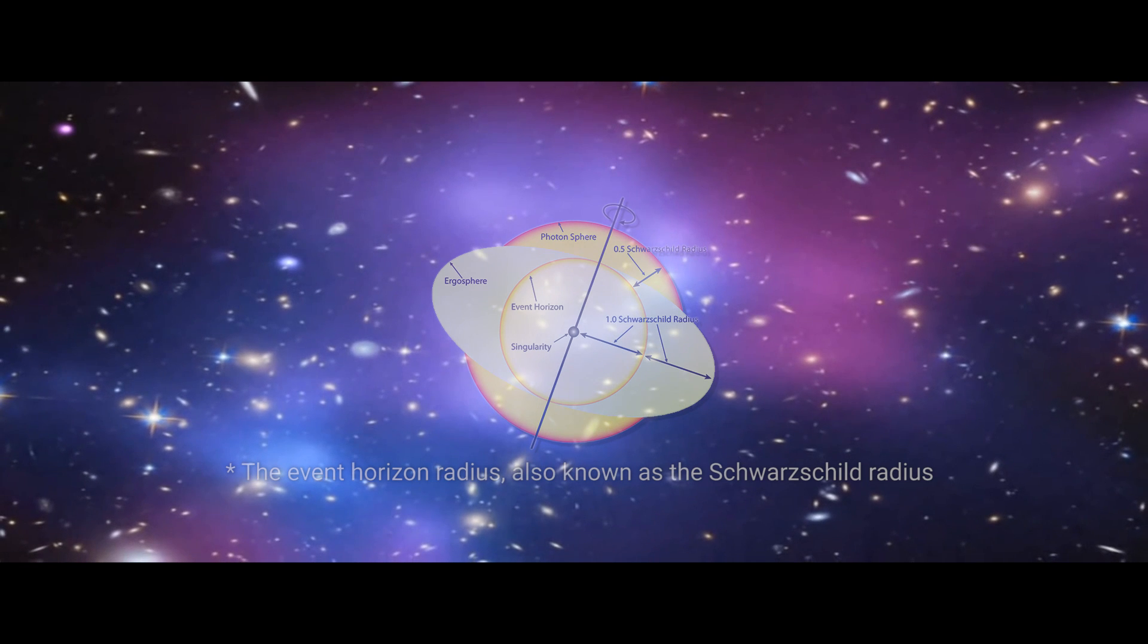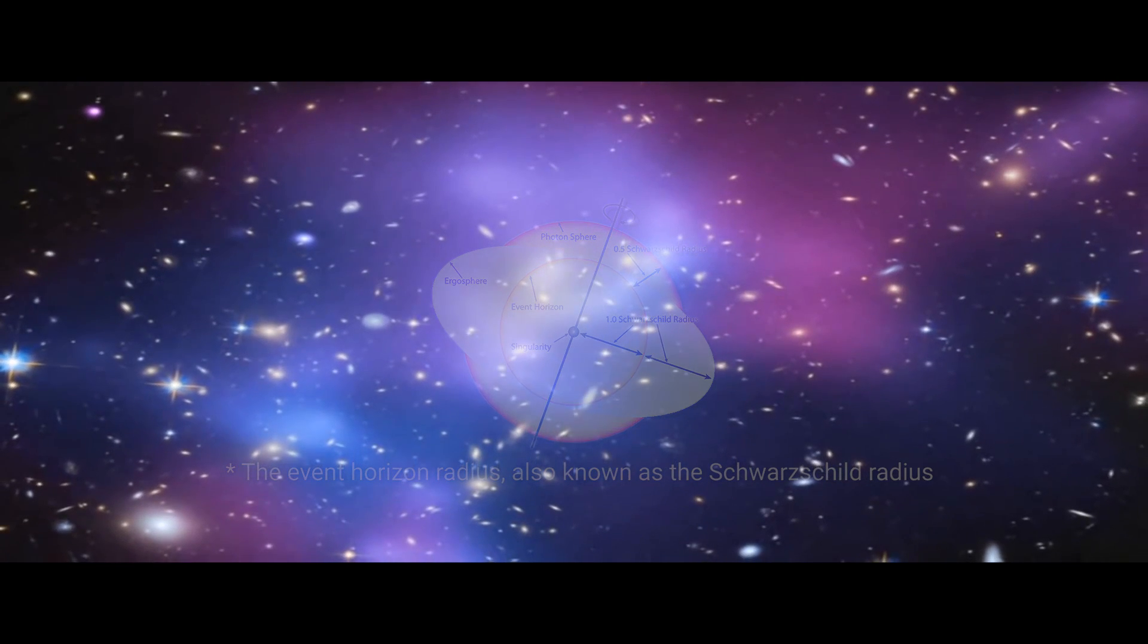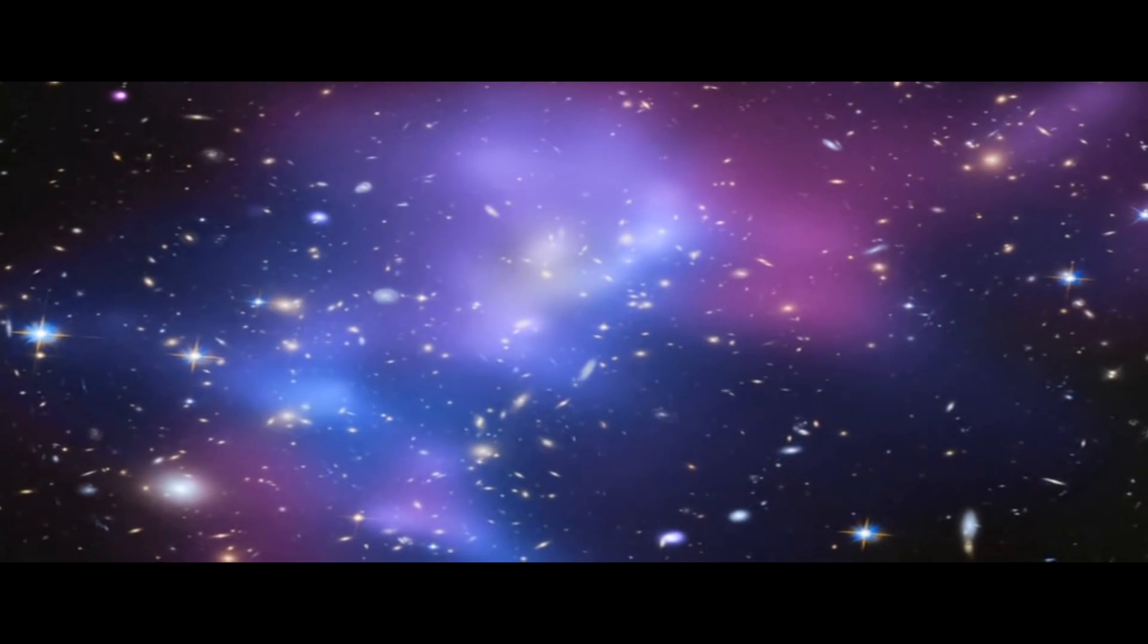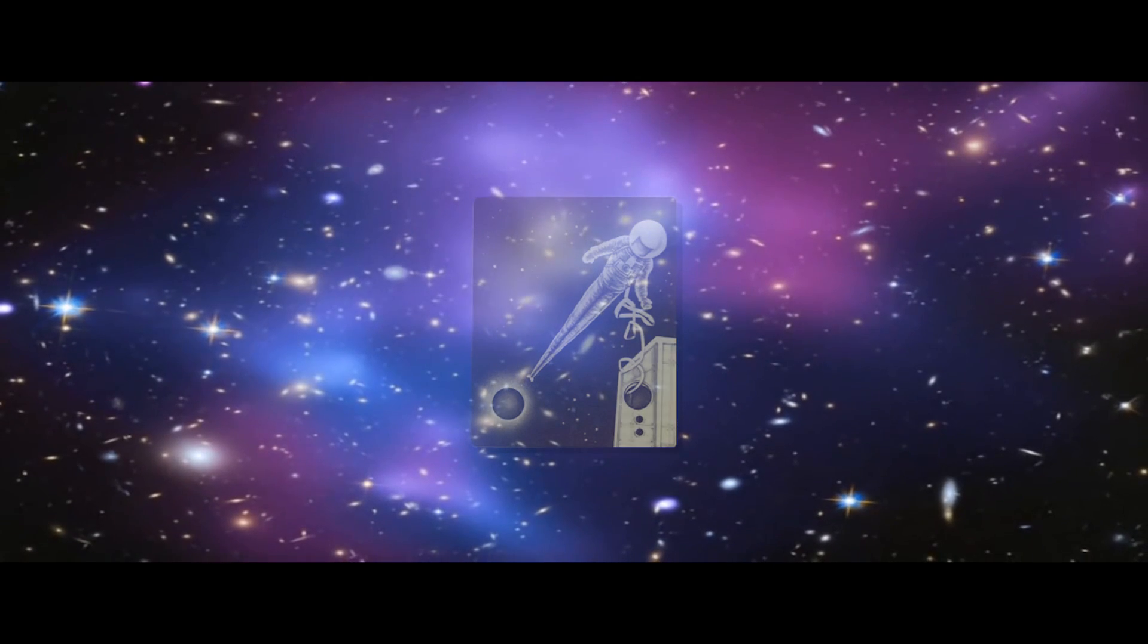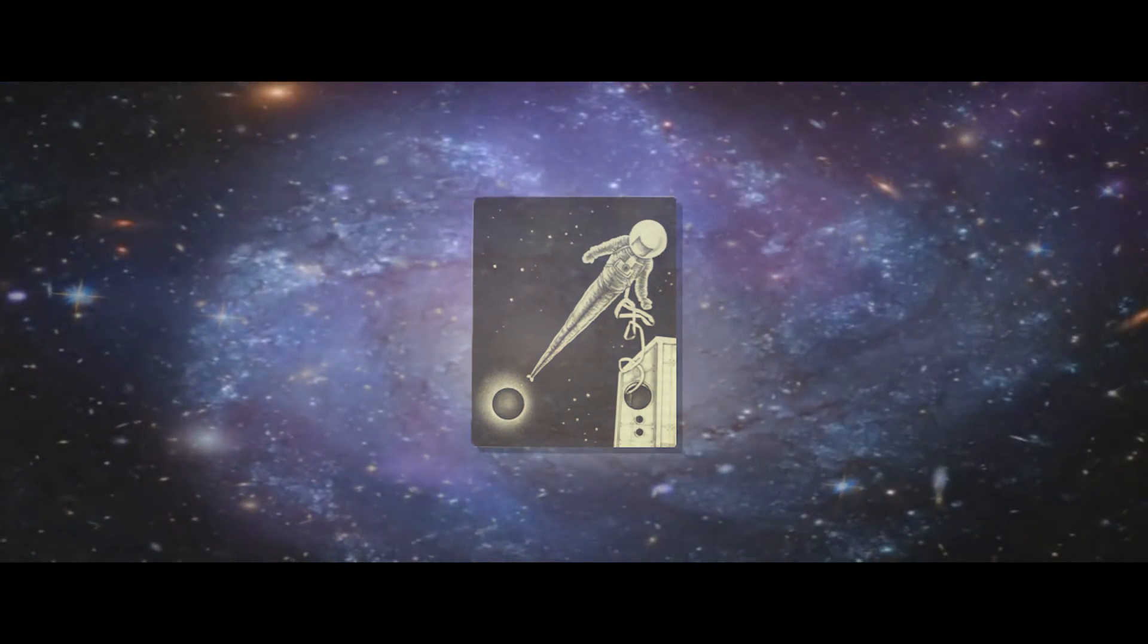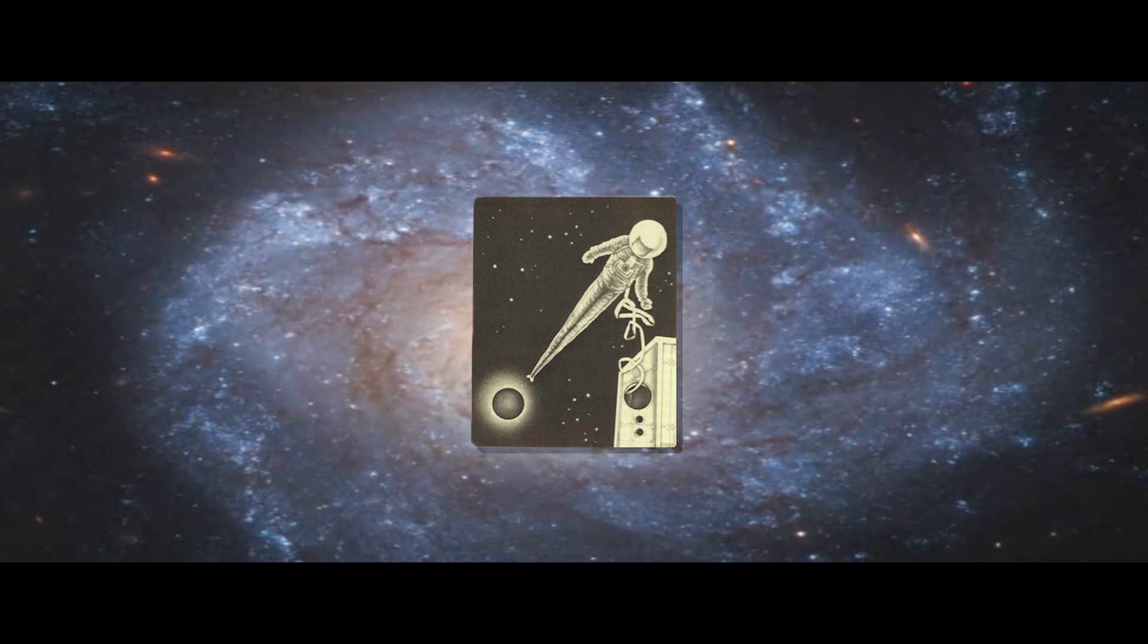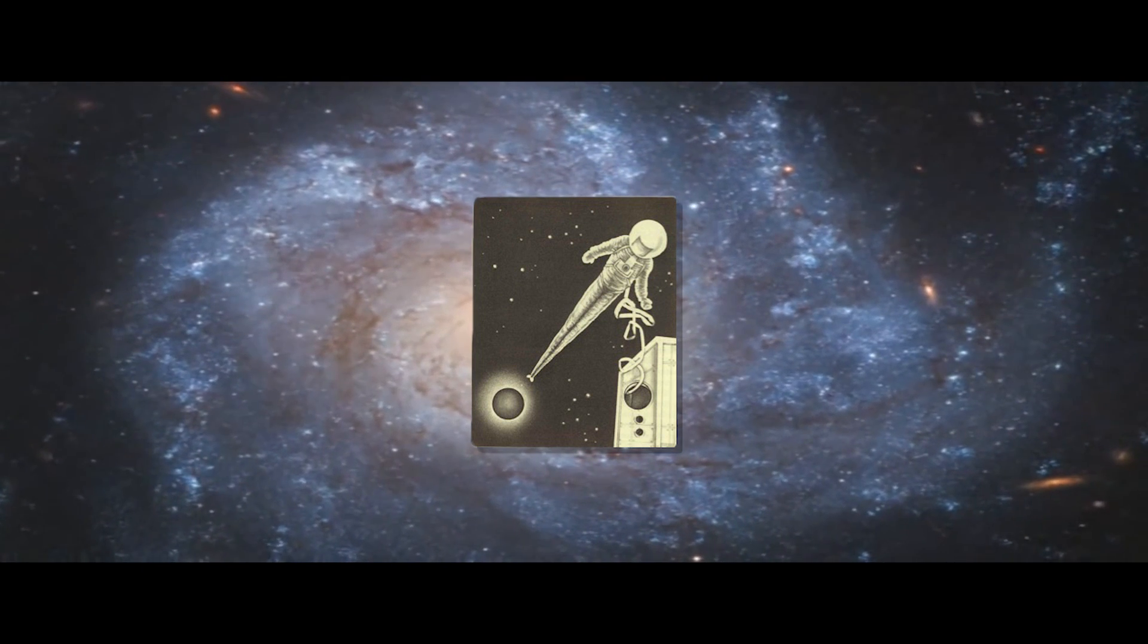Because a black hole has such a gravitational pull near its event horizon, space and time itself around the black hole can get distorted. One example of an interesting result of this massive pull is something called spaghettification. That is a real word by the way. Because the effect of gravity on an object gets so much stronger the closer it gets, the object itself gets torn apart.